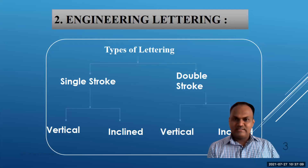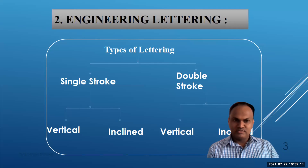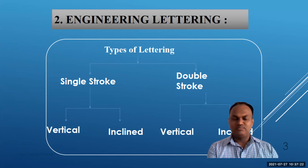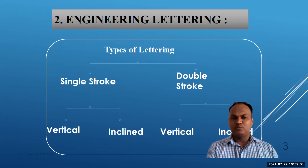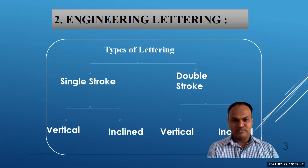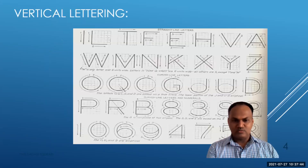We'll see engineering lettering — what types of lettering we can do in engineering. Single stroke and double stroke; normally single stroke lettering is used in all the sheets. There are two types in single stroke: vertical and inclined, but vertical is the one in practice. Double stroke is also available in vertical and inclined, but we prefer single stroke vertical lettering.